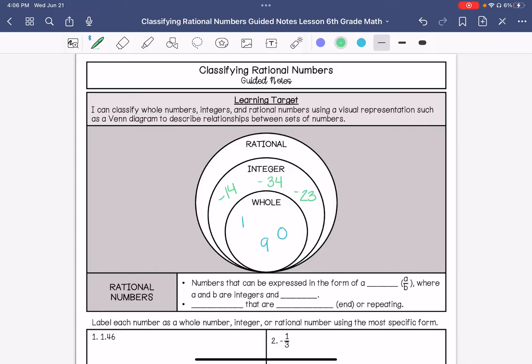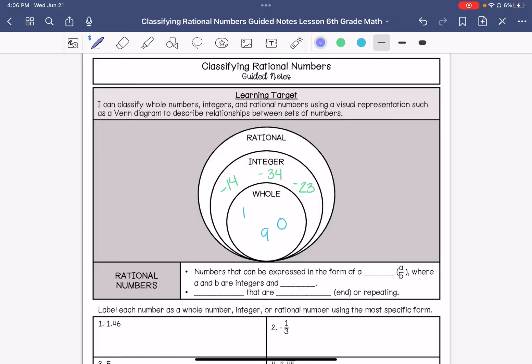Rational numbers are numbers that can be represented as a fraction or decimals that are terminating, which means they end, or they are repeating. So some examples: negative 2/3, 1.98, or 1.13 repeating. So that would be 1.13, 1.13, 1.3, 1.3, 1.3, on and on and on.